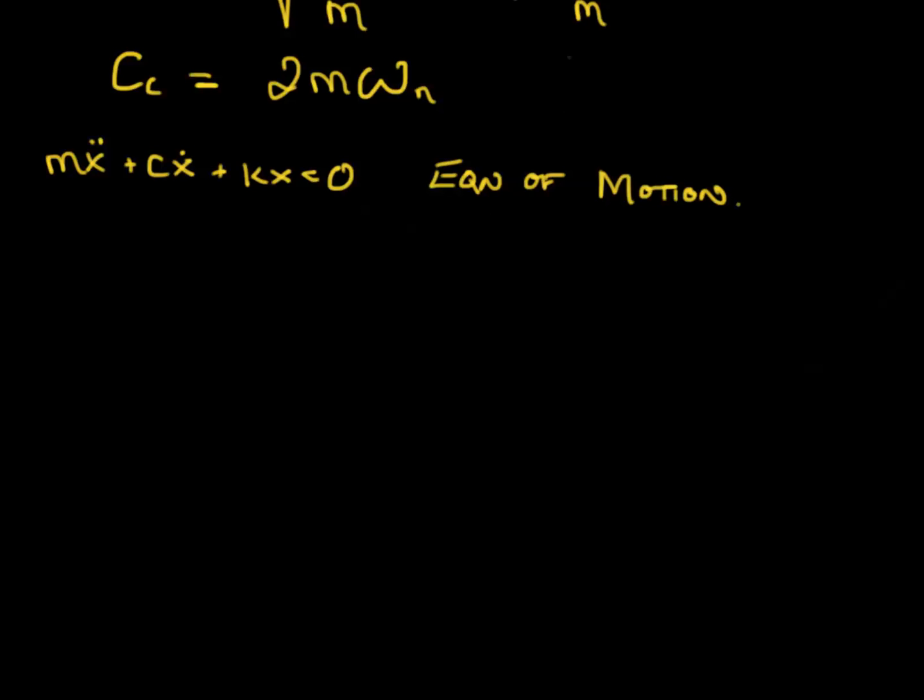We define a parameter that we're going to call zeta. And zeta is very simply the ratio of damping to your critical damping. If zeta is equal to one, then you're at critical damping. If zeta is equal to zero, then you've got no damping. If it's less than one, you've got an underdamped situation. If it's greater than one, you've got an overdamped situation. So the damping ratio also means that C can be rewritten as the damping ratio times C critical, and we know C critical here.